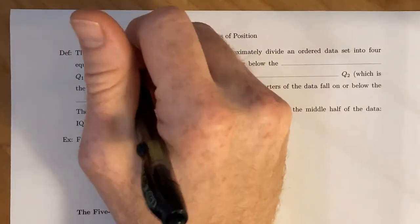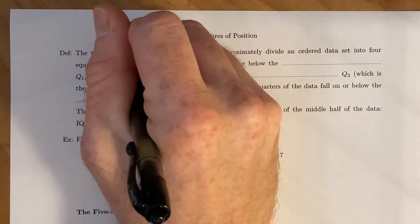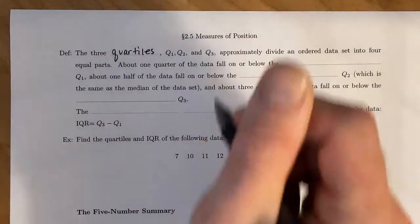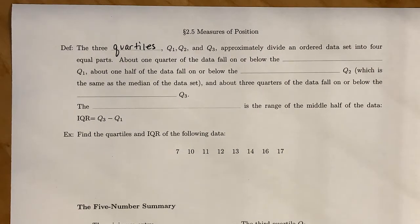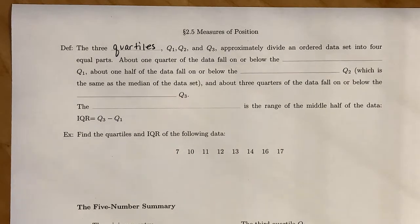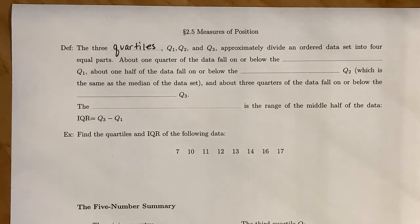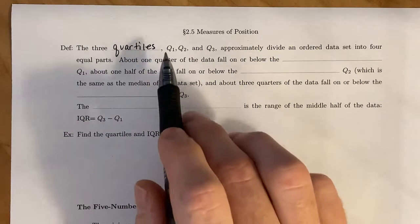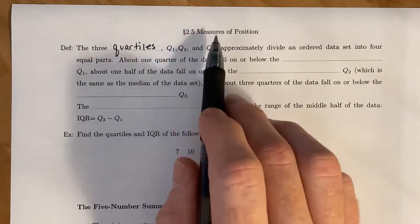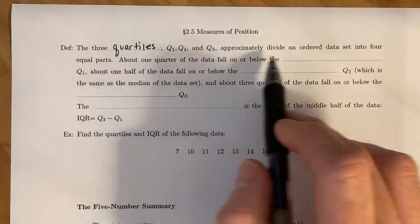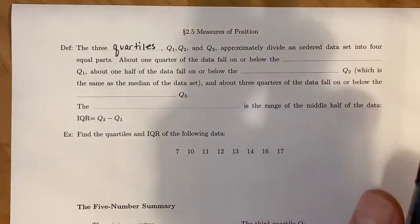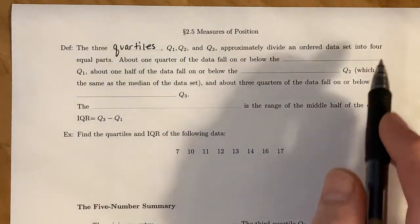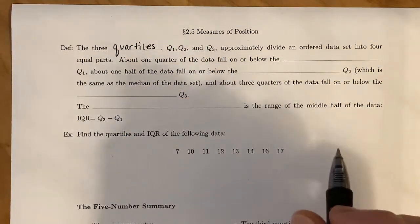There are three quartiles, and the reason why they're called quartiles with the prefix 'quart' is that it breaks up your data set into four parts. You need three numbers to break it up into four parts, and those are represented with Q₁, Q₂, and Q₃. These approximately divide an ordered data set into four equal parts.